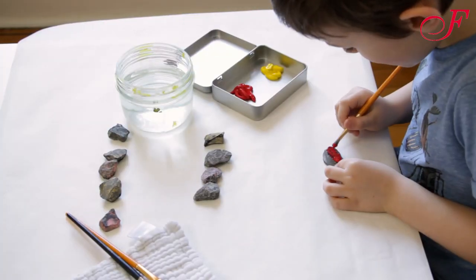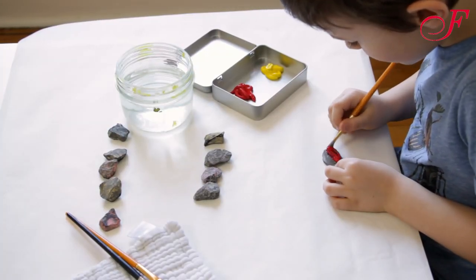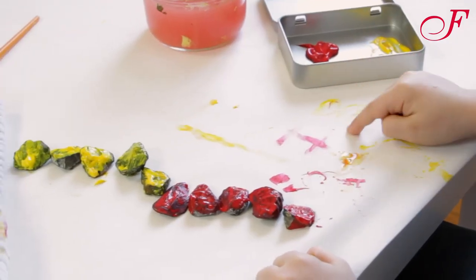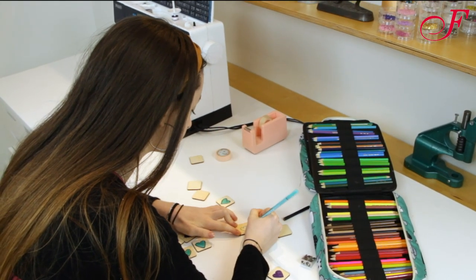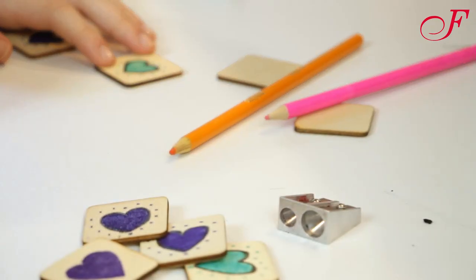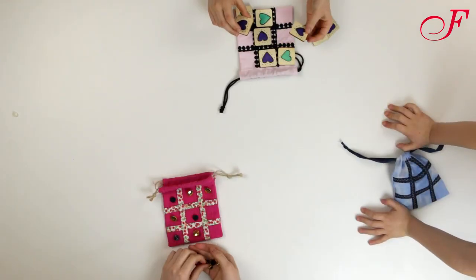Now you need to prepare the pieces. You need 10 game pieces, 5 of each color or shape. Your children will be able to paint on little rocks, draw on wood pieces or you can make felt pieces.